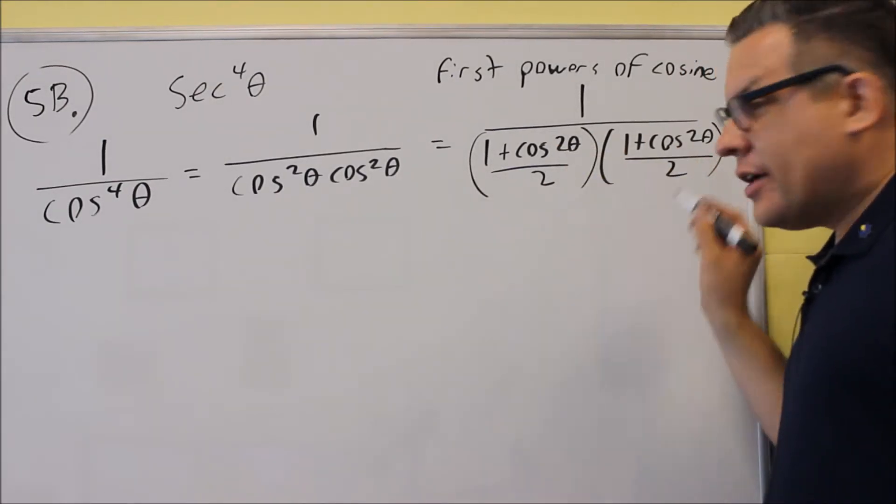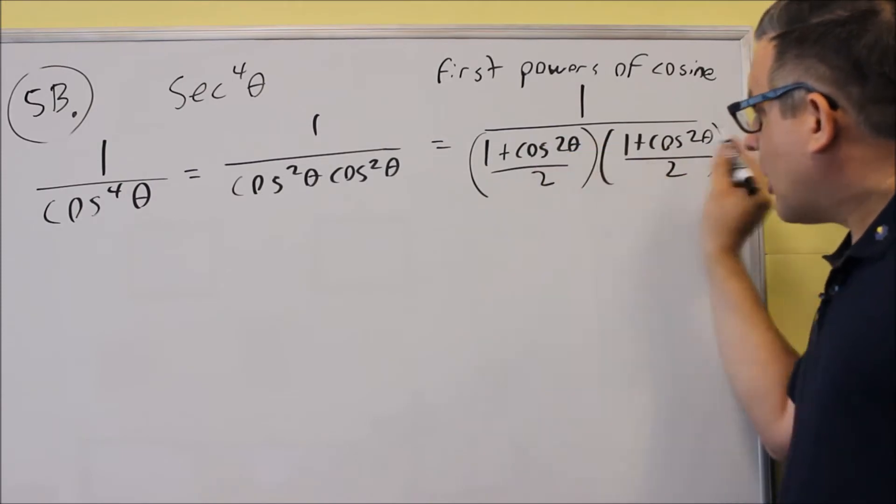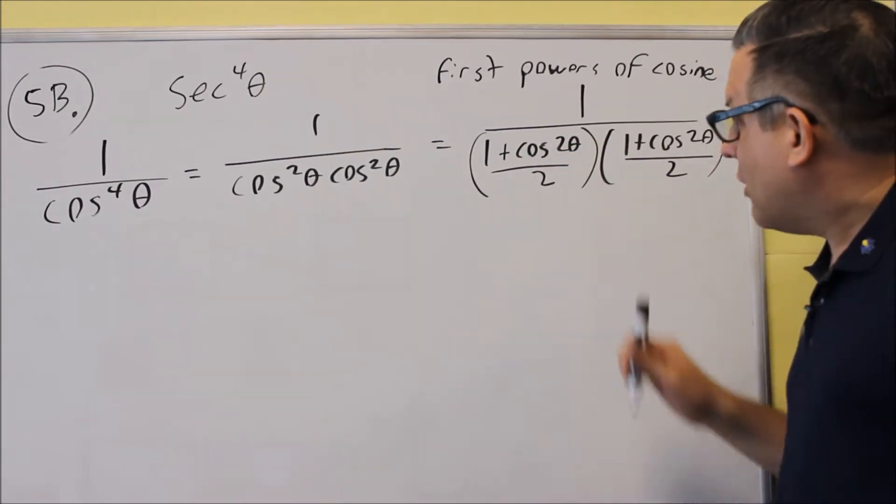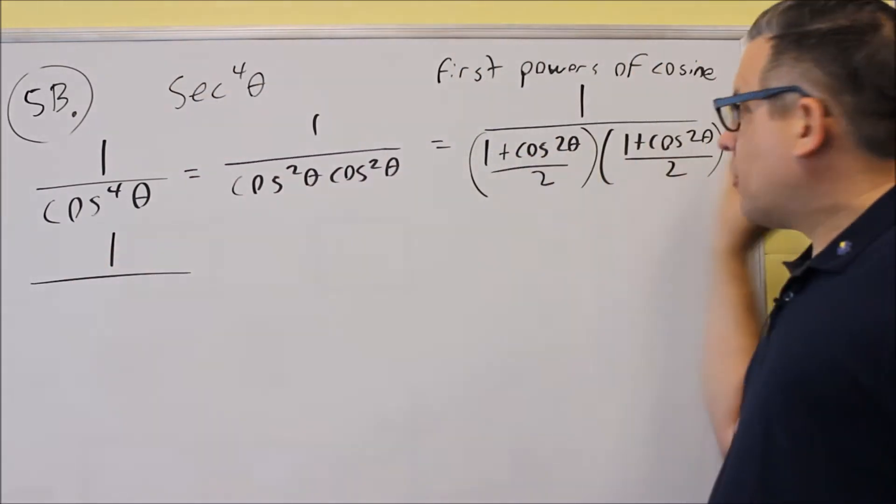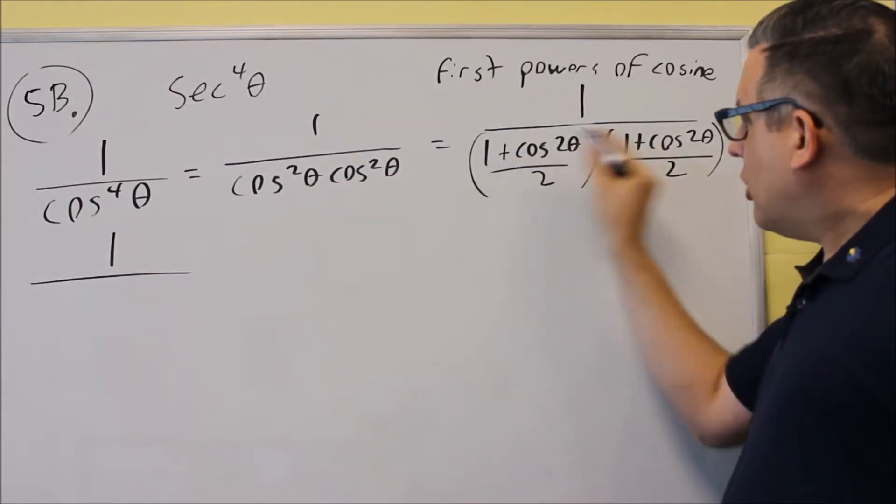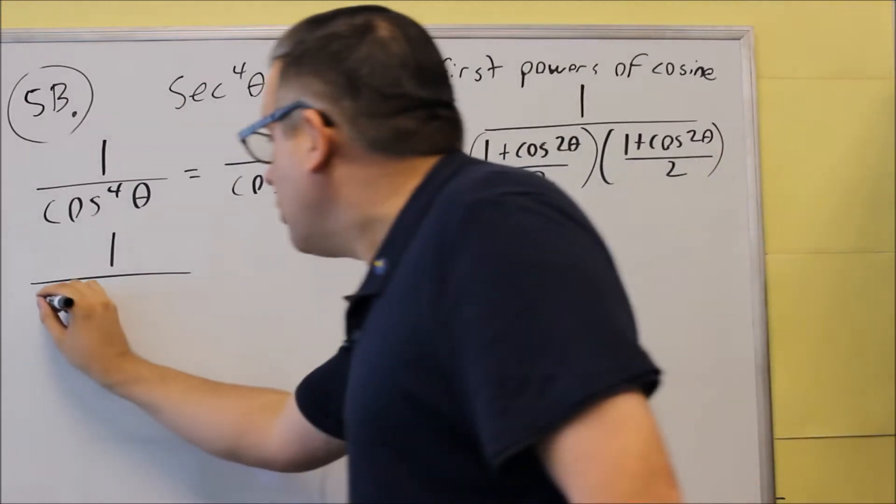Now, we want to multiply this together, so across the top, across the bottom, and we'll do that next. So we have 1 over on the bottom. We're going to multiply all this out. Now, when you multiply this, you get 1 times 1. You get 1.